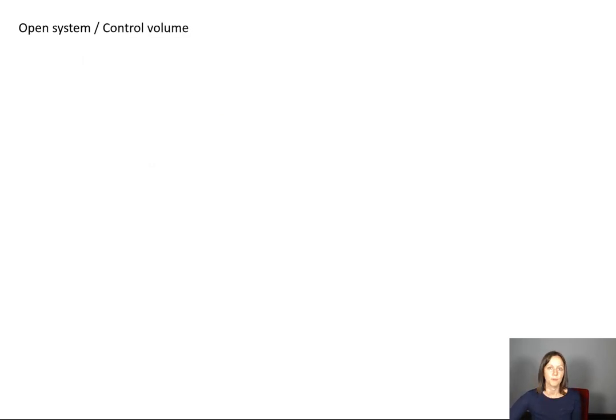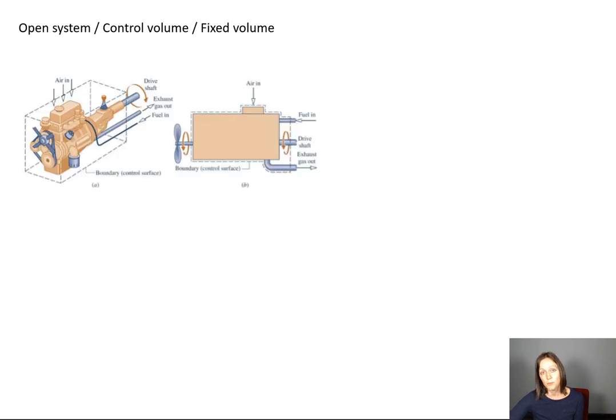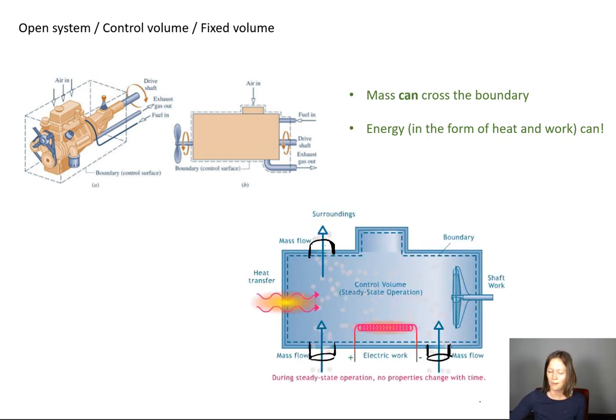Open system. Sometimes you refer to it as a control volume. That's very common. Less common would be a fixed volume. All those terms are synonymous. And no big surprise here, with an open system, mass can cross the system boundary. And energy can cross the system boundary, specifically in the form of heat and work. And by the very nature of mass flowing in and flowing out, because mass carries with it energy, it can cross the boundary in the form of mass.